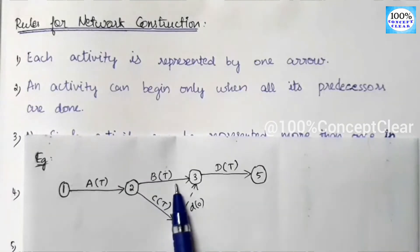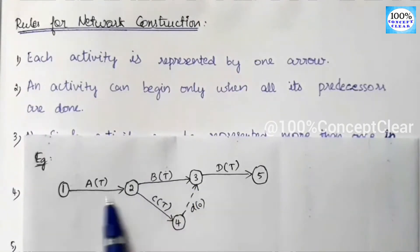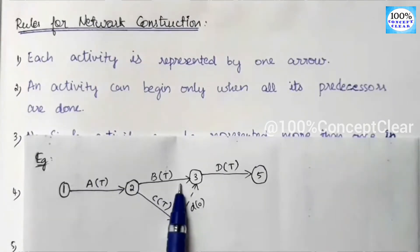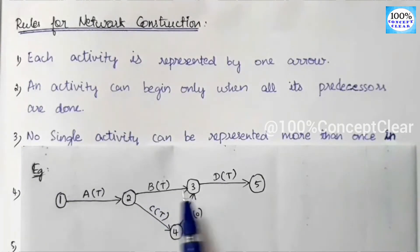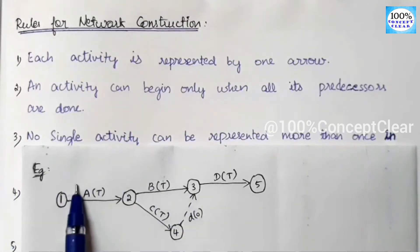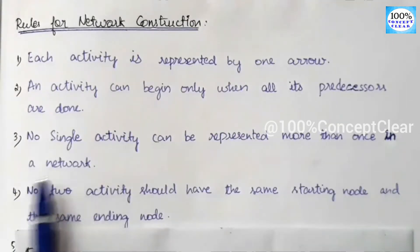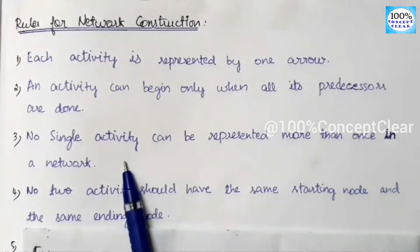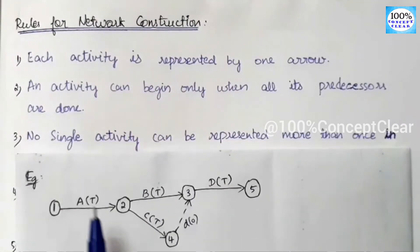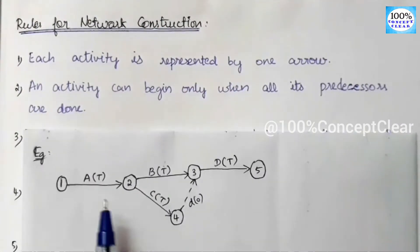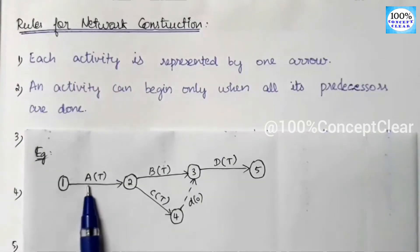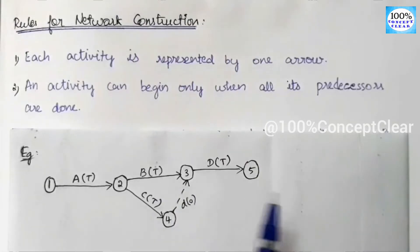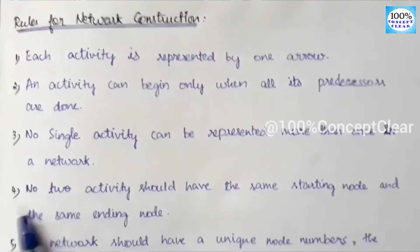So when we start B activity, we must start A activity first. When A activity is complete, then we start B activity. The third rule is: no single activity can be represented more than once in a network. In the network diagram, we can represent one activity only once.